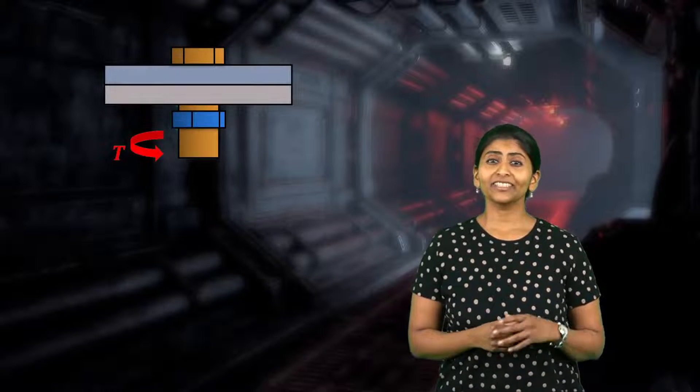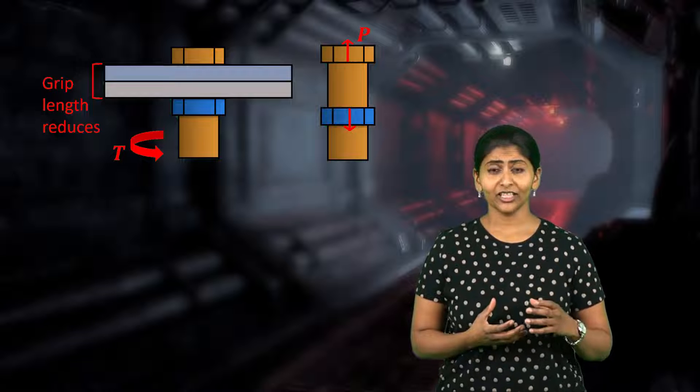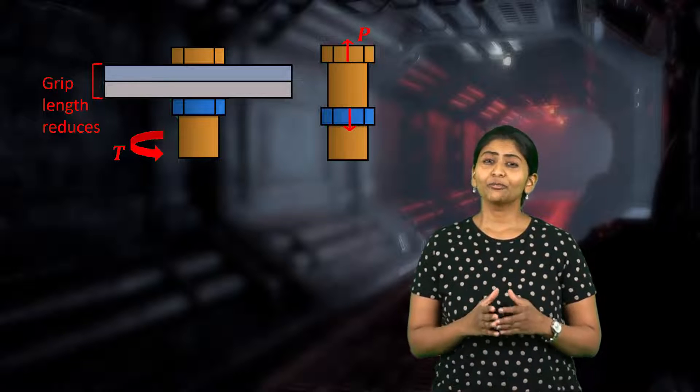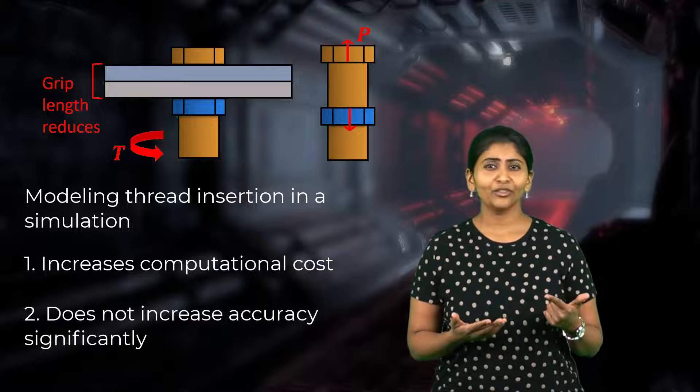In the real world, we tighten a bolt by applying torque and rotating it, which reduces its grip length and produces the tensile preload. But when we model a bolt in a simulation, we don't want to apply torque to the bolt head to simulate thread insertion because it would be computationally expensive and not add any value or accuracy to the results. Instead, we mimic the shortening of the grip length by slicing the bolt in two parts and applying preload to both parts. The finite element mesh will actually overlap in the cut region, but this is a convenient way of modeling the shortening of the grip length that occurs when the bolt is tightened.